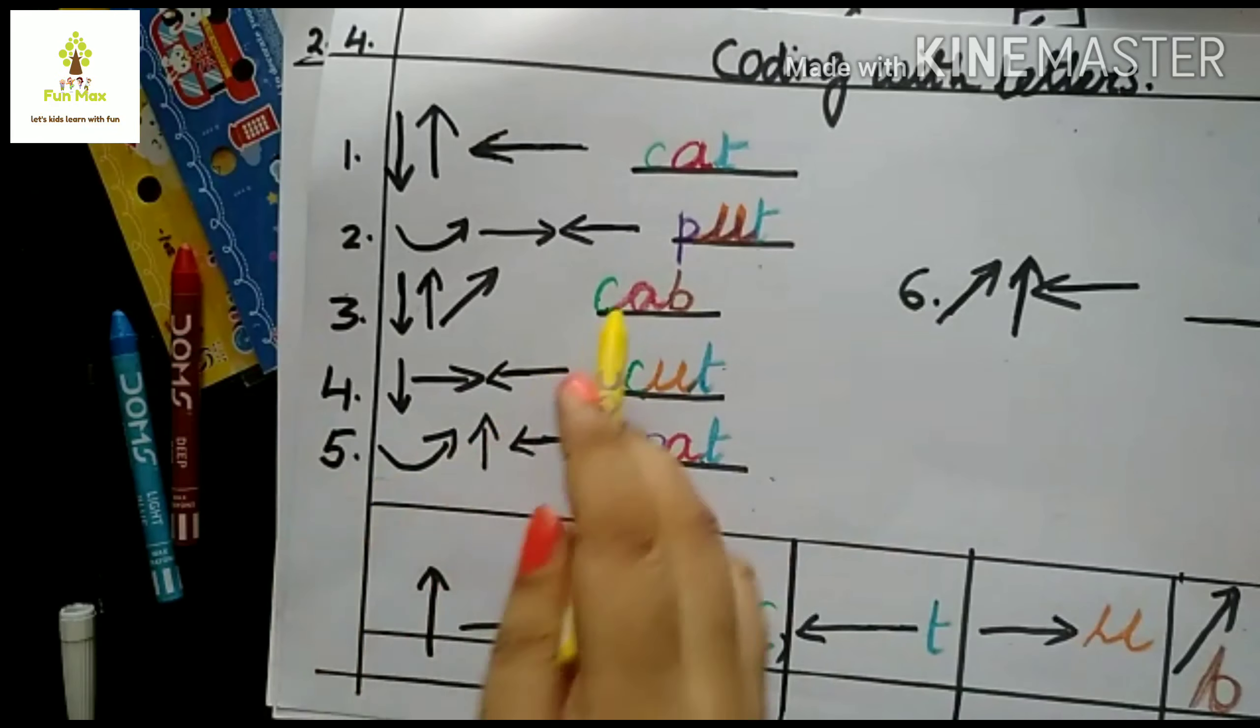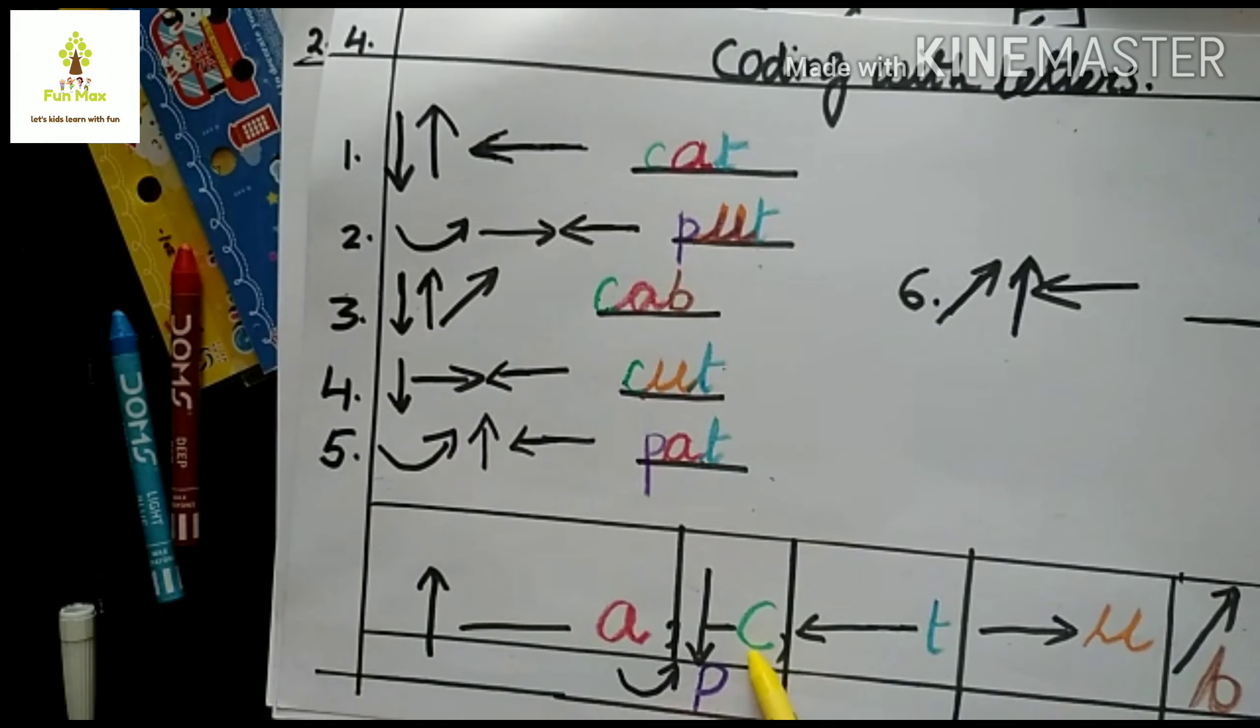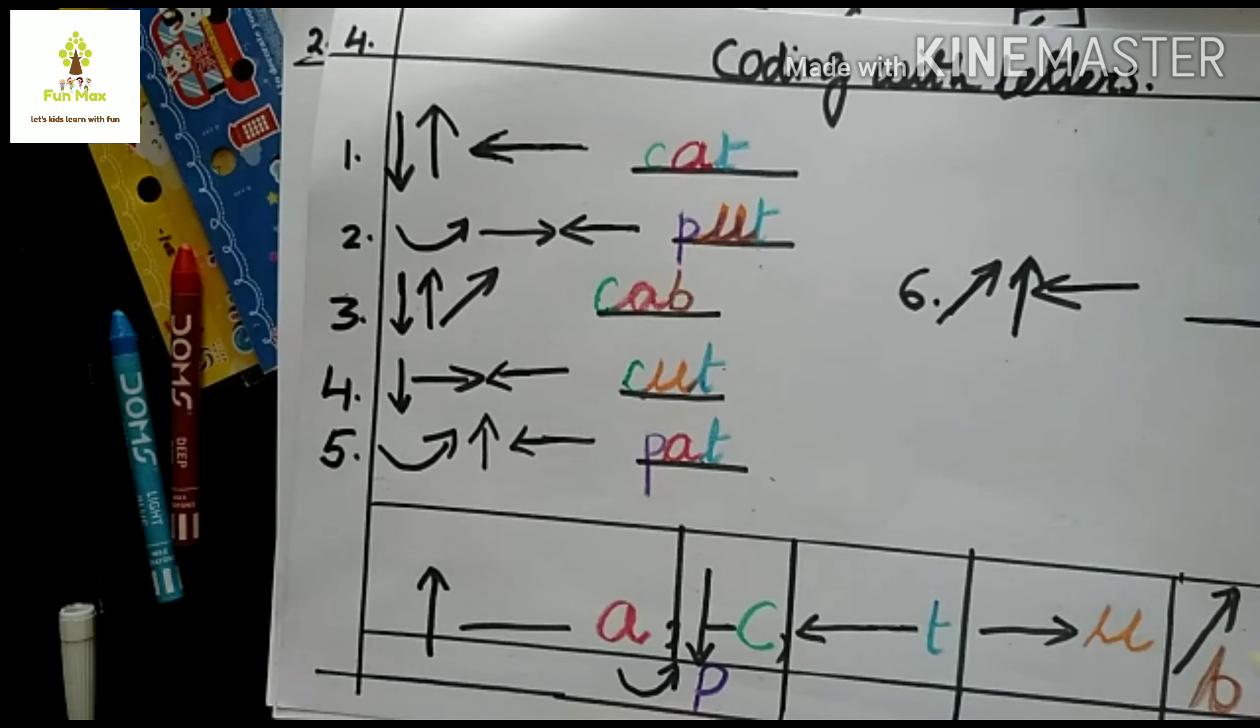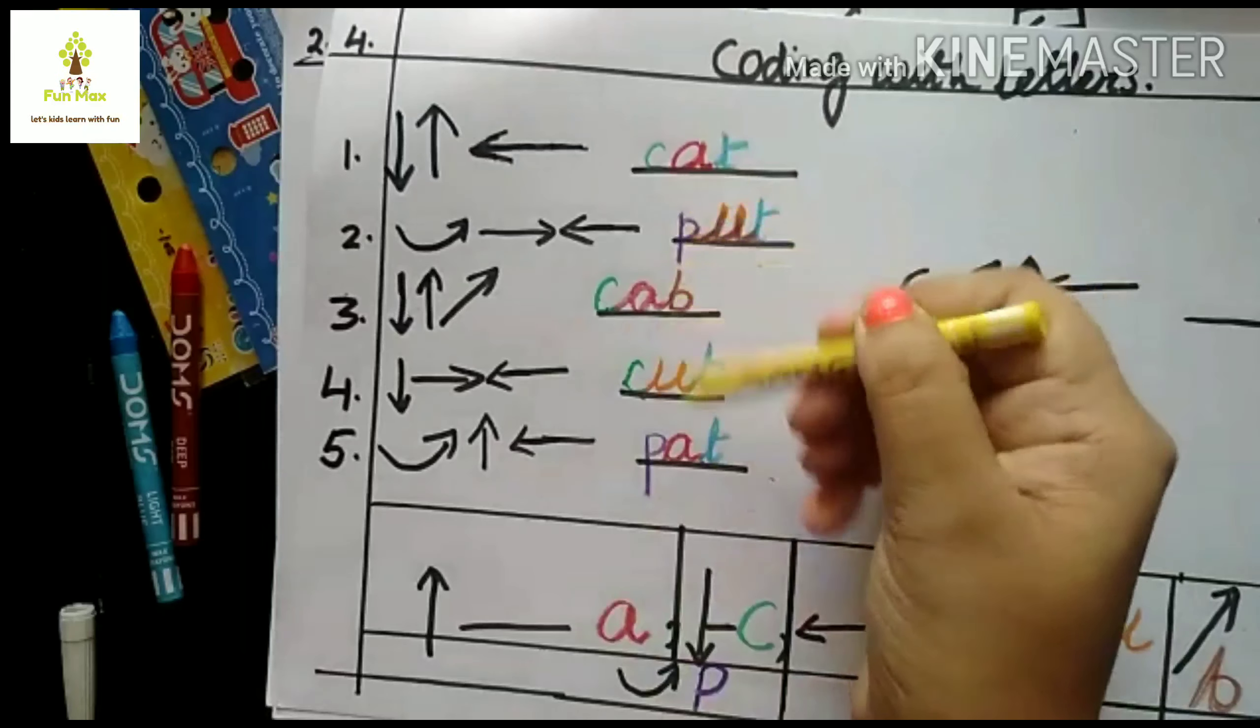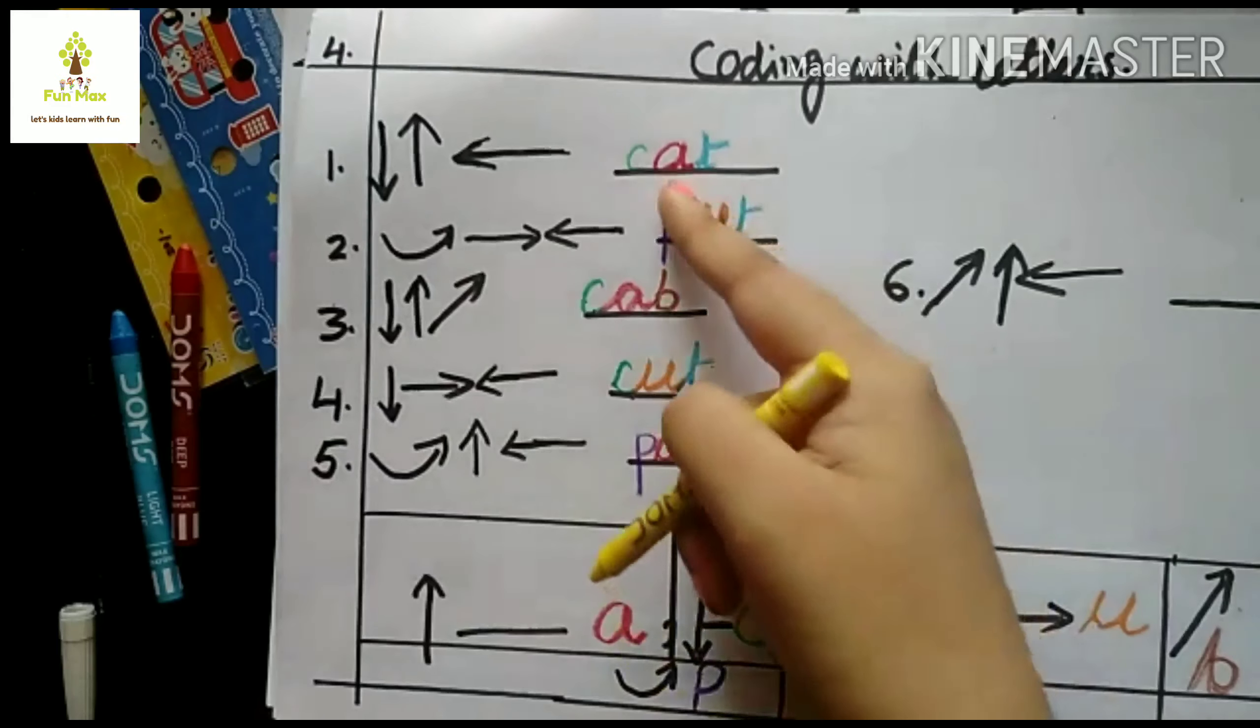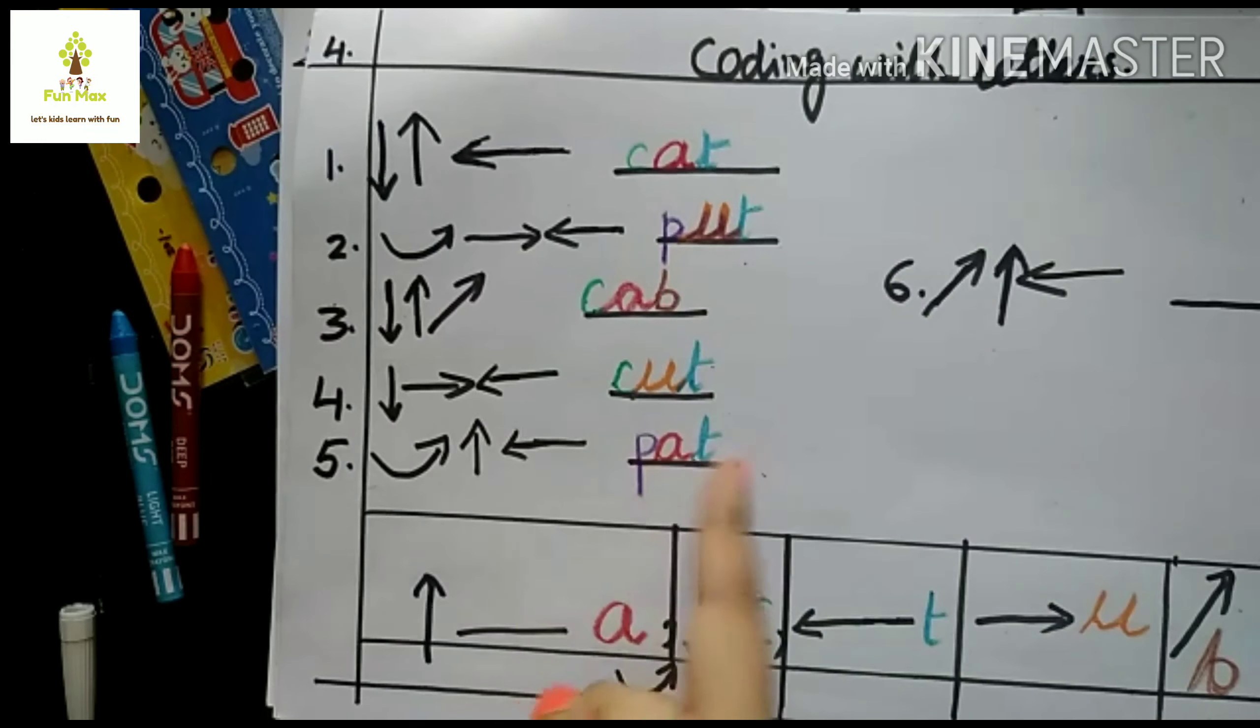In this way, down arrow C, up arrow A, and slanting right arrow B. Cab. In this way they can make the frame of words. Different words: cat, put, cab, cut, pat.